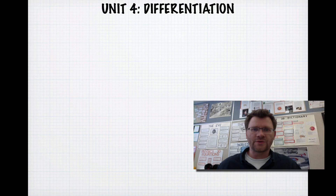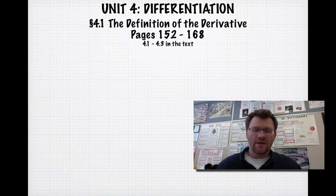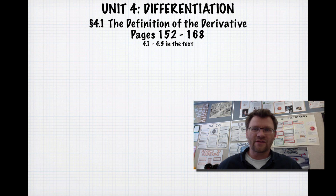We're starting Unit 4, which is called Differentiation. We're looking at 4.1 today, which is the definition of the derivative. That's on pages 152 to 168 in your text, and make note that it's actually the first three sections in your text all sort of wrapped up in one.